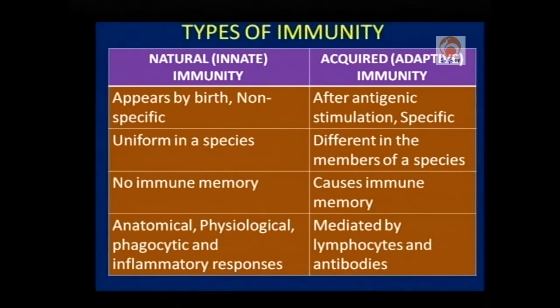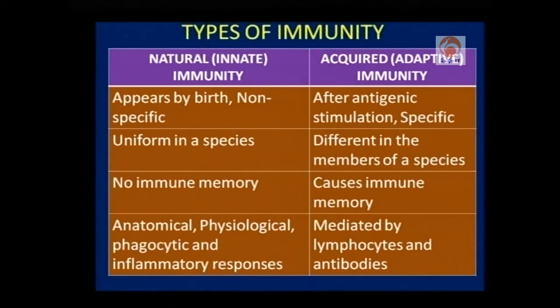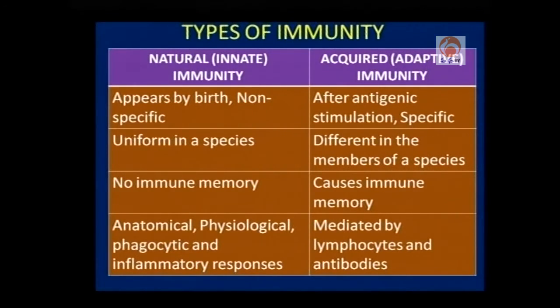The resistance offered by the immune system is of two types: one is natural immunity and the other is acquired immunity. Natural immunity is otherwise called innate immunity, while acquired immunity is called adaptive immunity. Natural immunity appears by birth; it is nonspecific — more of a general nature, fighting against a variety of infecting agents. In addition, it is uniform in a given species.